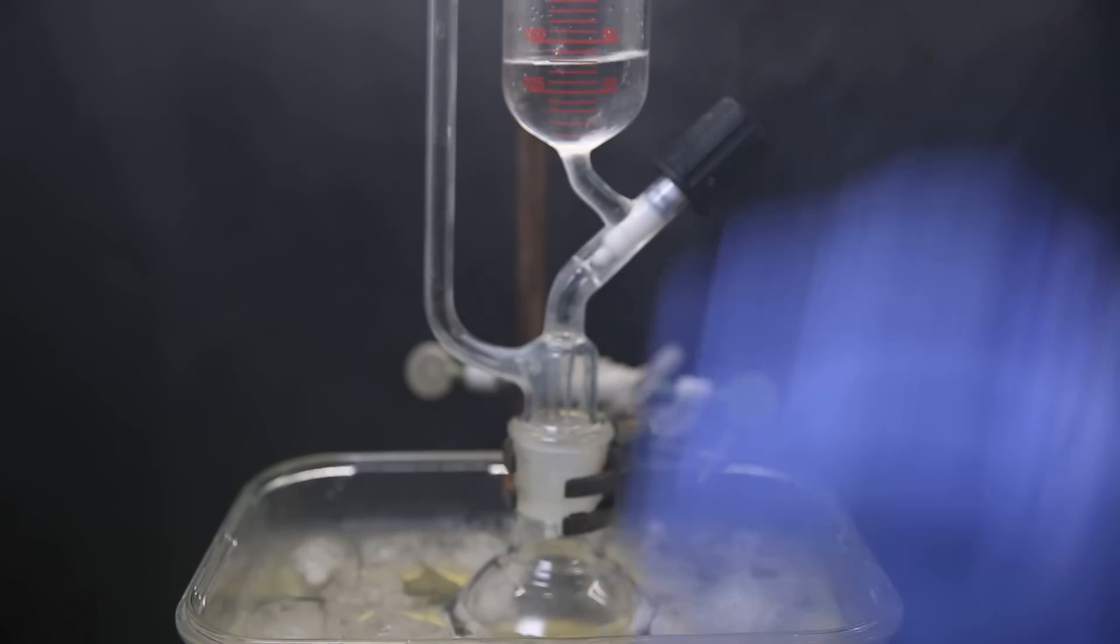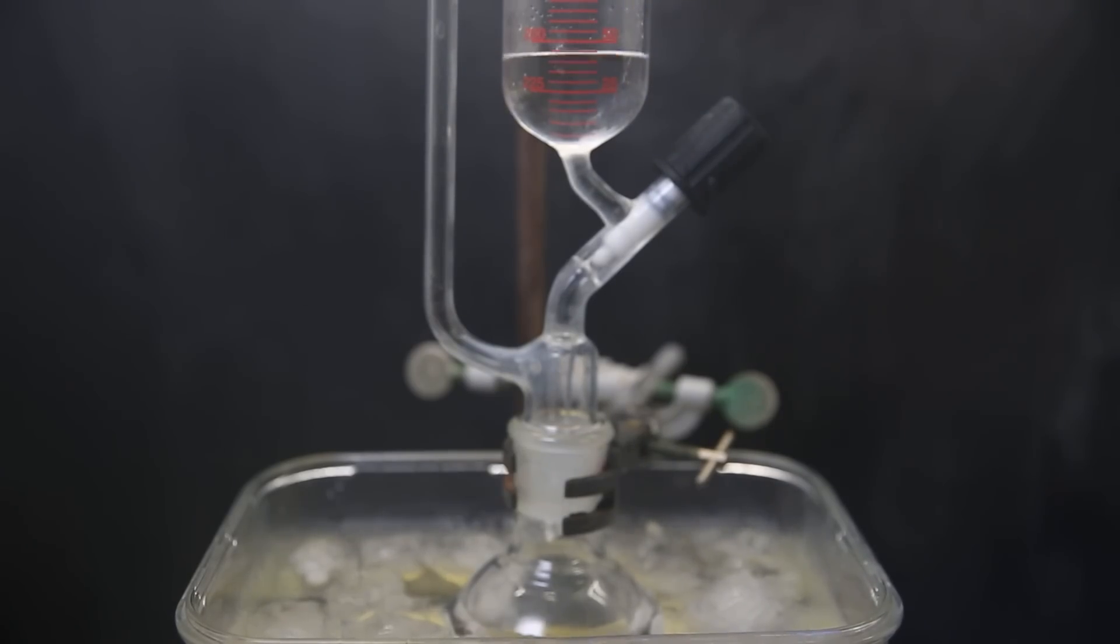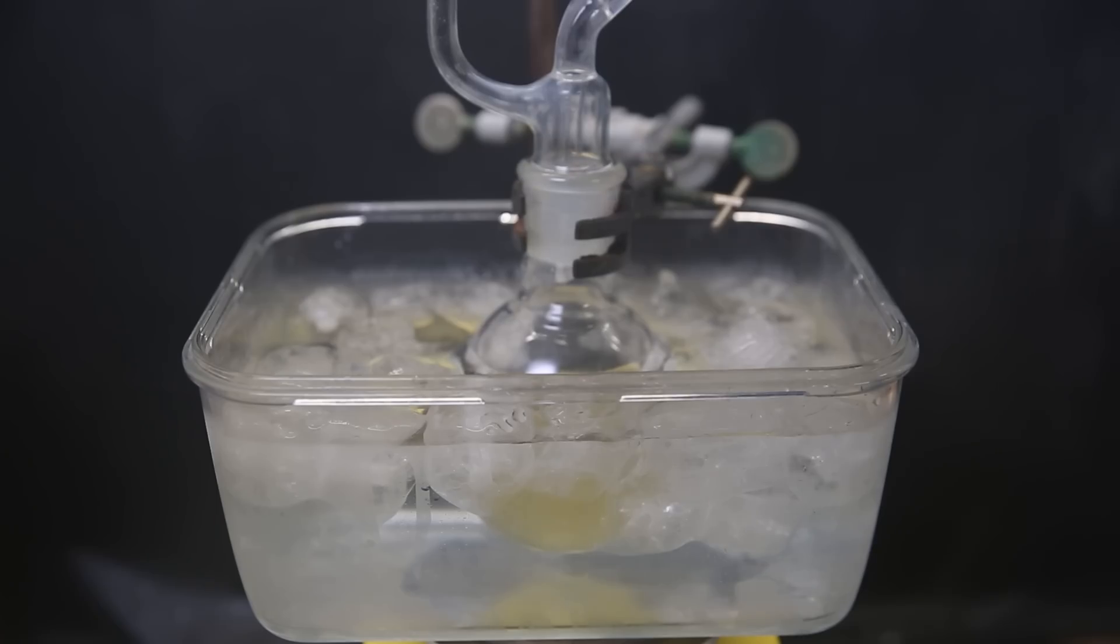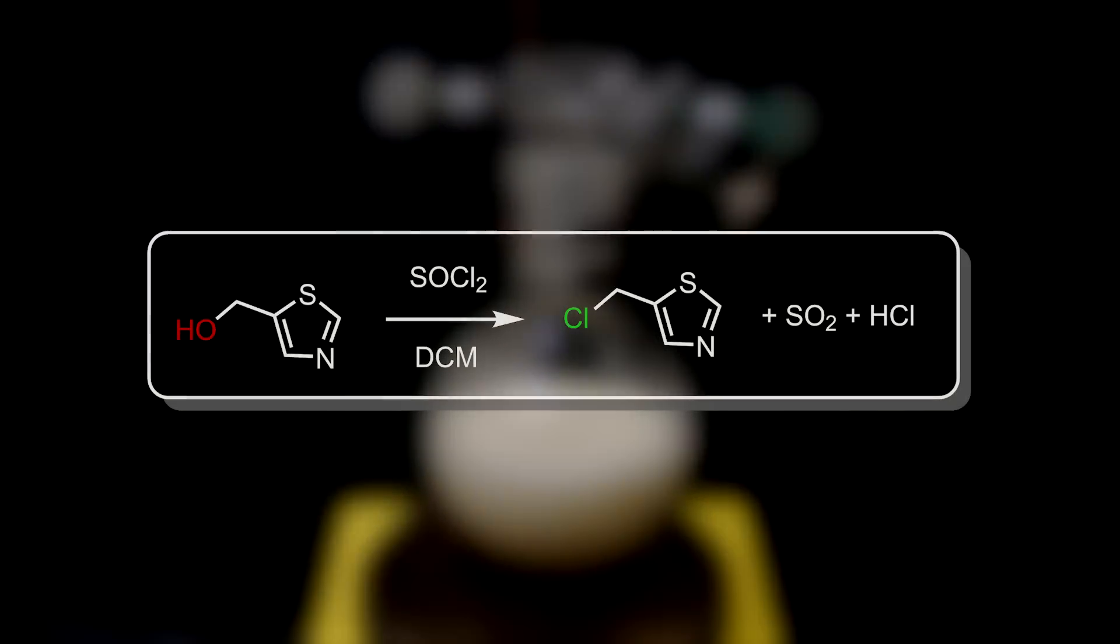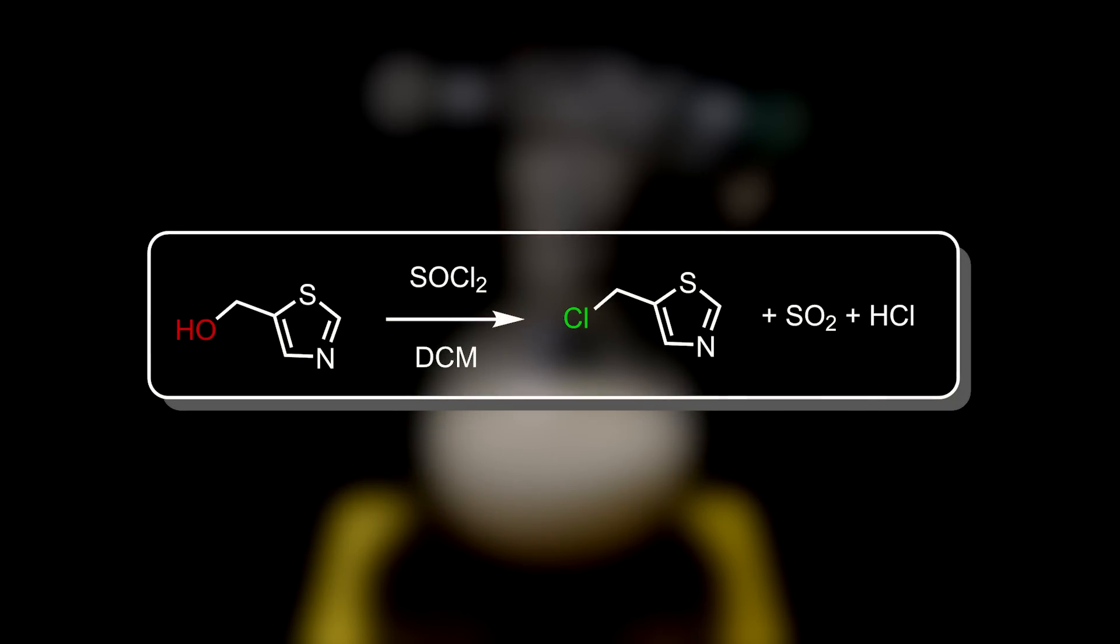I slowly drop in the mixture into the flask and it reacts immediately, forming a precipitate and becoming cloudy. I let it sit in the ice bath for the duration of the addition, and I then let it stir for 14 hours at room temperature. In this reaction, the hydroxyl reacts with thionyl chloride and is replaced by a chlorine, releasing sulfur dioxide and hydrogen chloride gas.